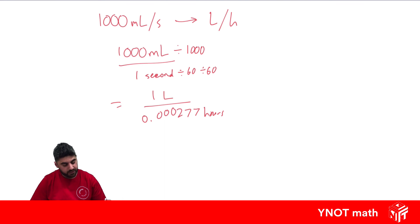And once we have the right units, because we wanted litres per hour, we've got litres per hour, we just divide these numbers with each other. So 1 divided by this small number. So whenever you divide by a small number, you actually get a big number. So 1 divided by 0.000277 is going to actually give us 3600 litres per hour.